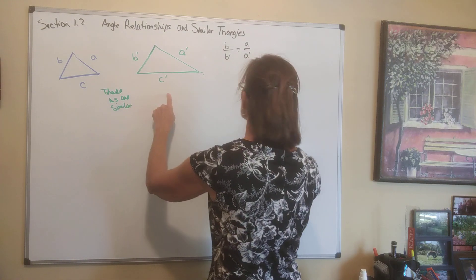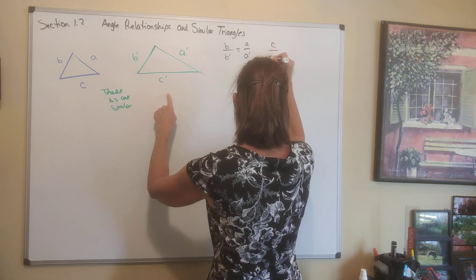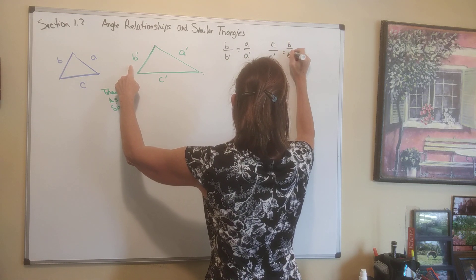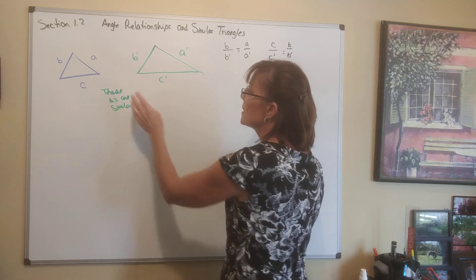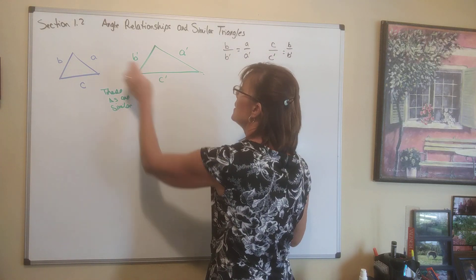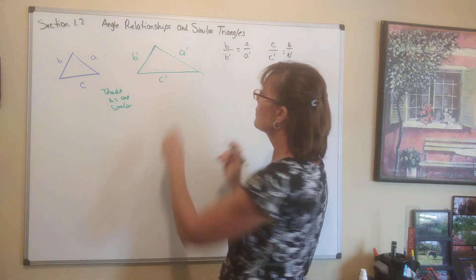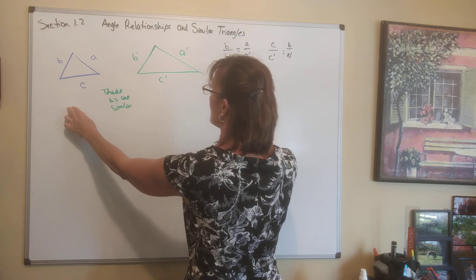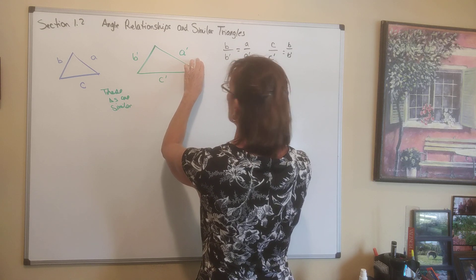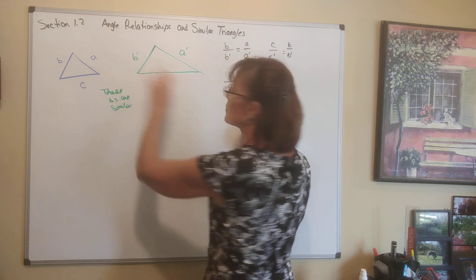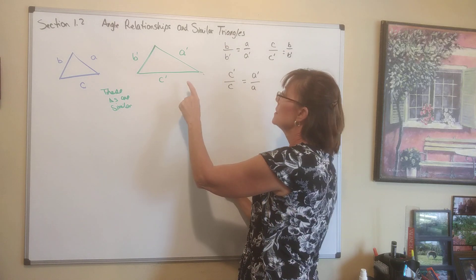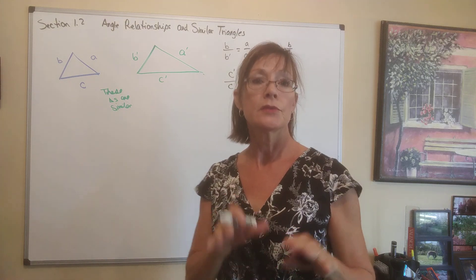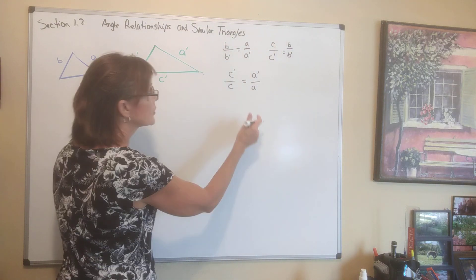We could also say C is to C prime as B is to B prime, or C is to C prime as A is to A prime. We could also do it backwards: C prime is to C as A prime is to A. Those are all true statements — these are all good proportions.